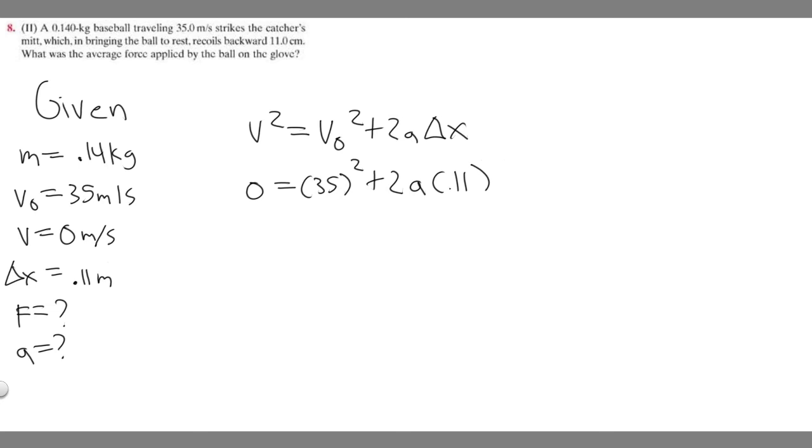If we solve this I'm going to move the 35² to the other side so it becomes -35² = 2(0.11)a which is 0.22a.